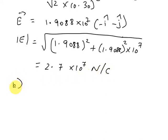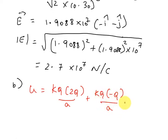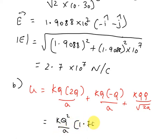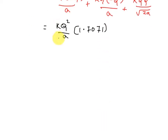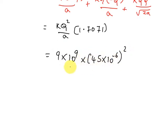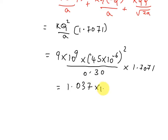Next, the potential energy of charge +Q due to the other charges: U = KQ·2Q/A + KQ·(−Q)/A + KQ·Q/(√2 · A), which equals (KQ²/A) × 1.7071. Substituting values: 9×10⁹ × (45×10⁻⁶)² / 0.30 × 1.7071, which gives U = 1.037 × 10² joules.